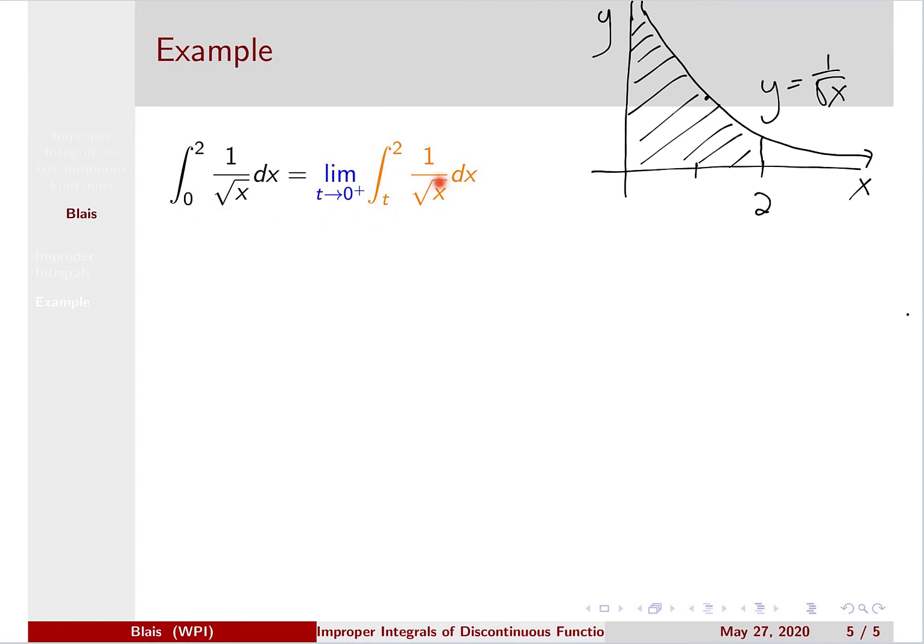And so using our definition, we break it up. And instead of starting the integral at 0, we start it at t. And we compute this area here. So this becomes the limit as t goes to 0 from the right of the integral from t to 2 of x to the negative 1 half dx.